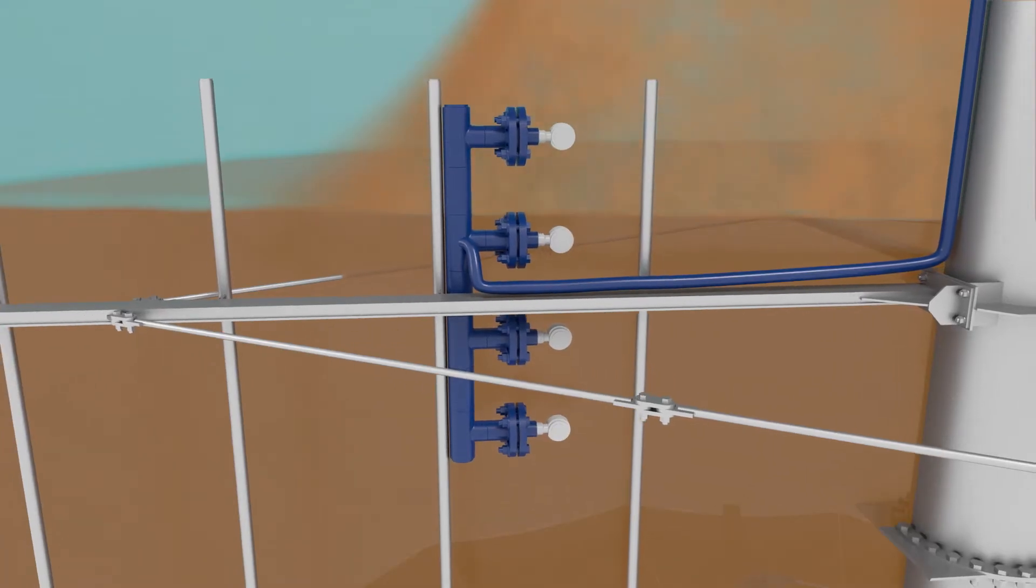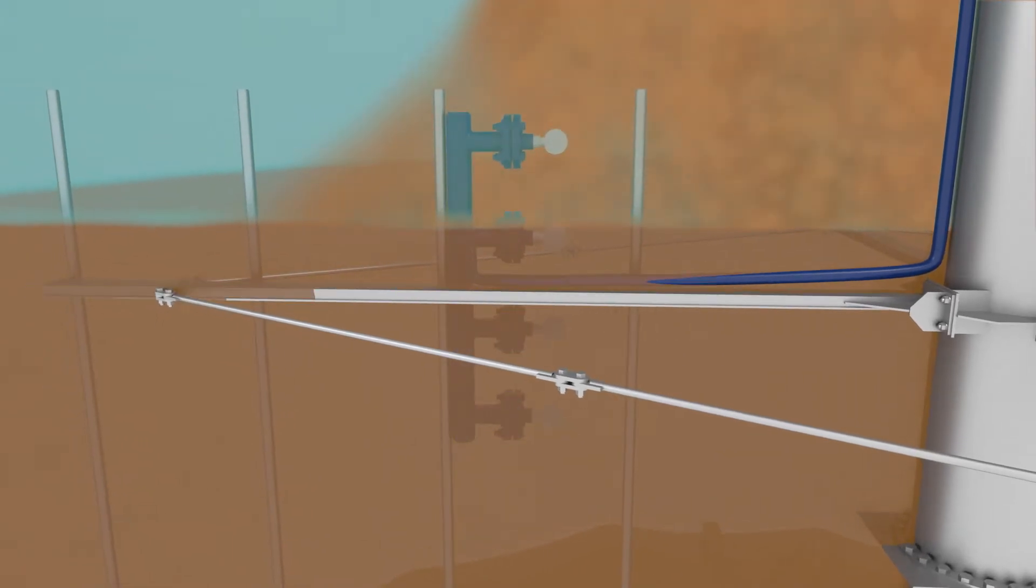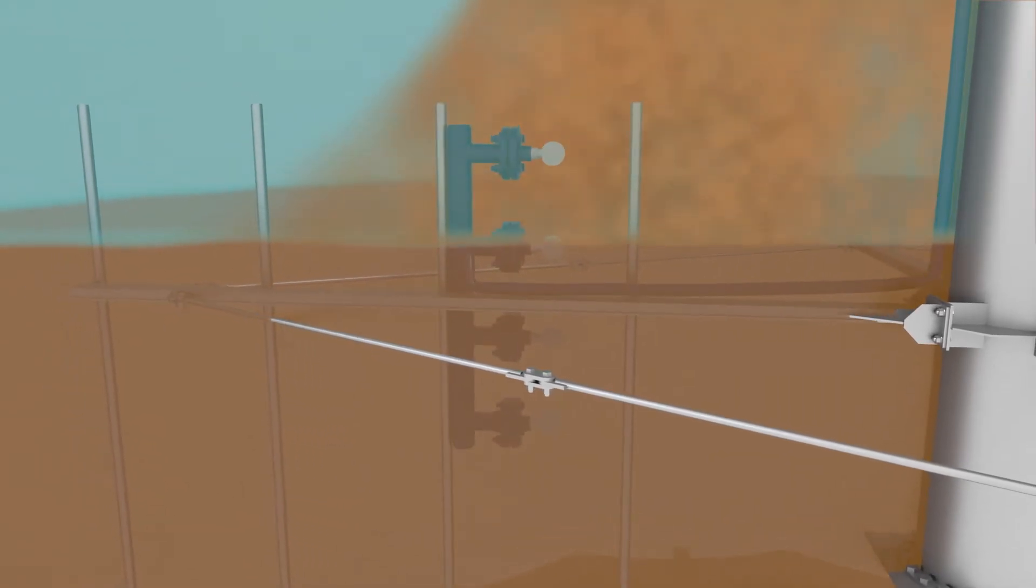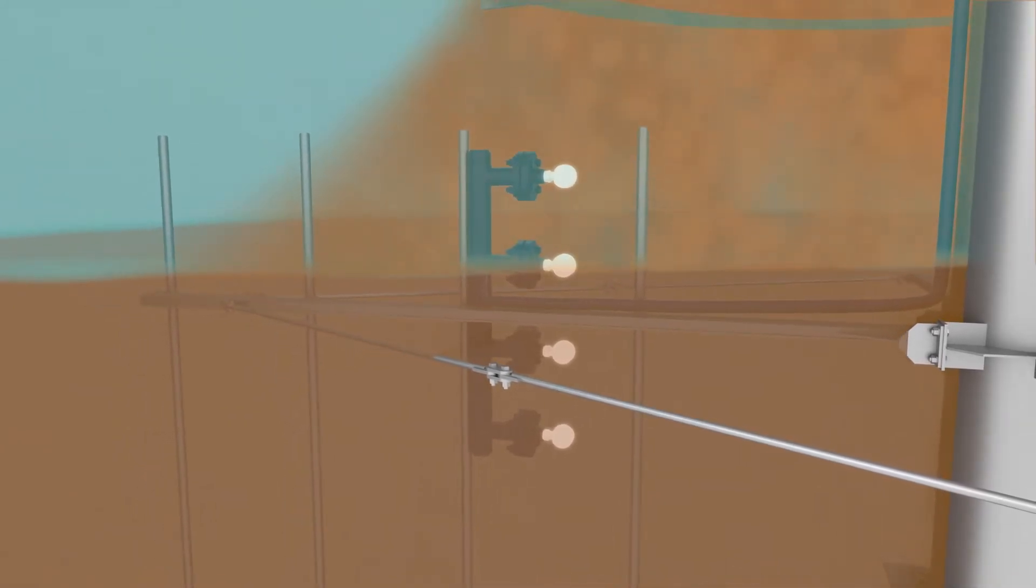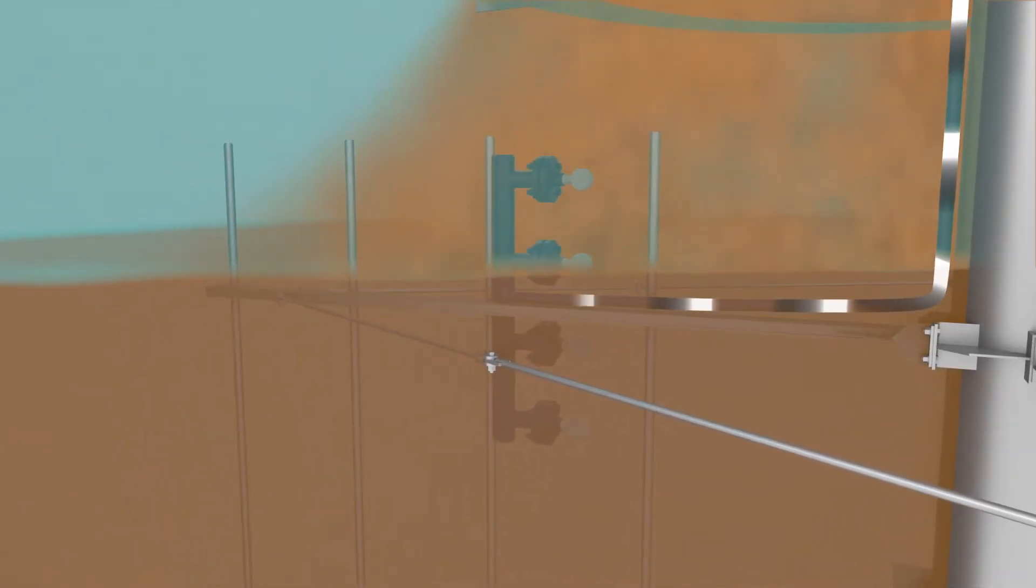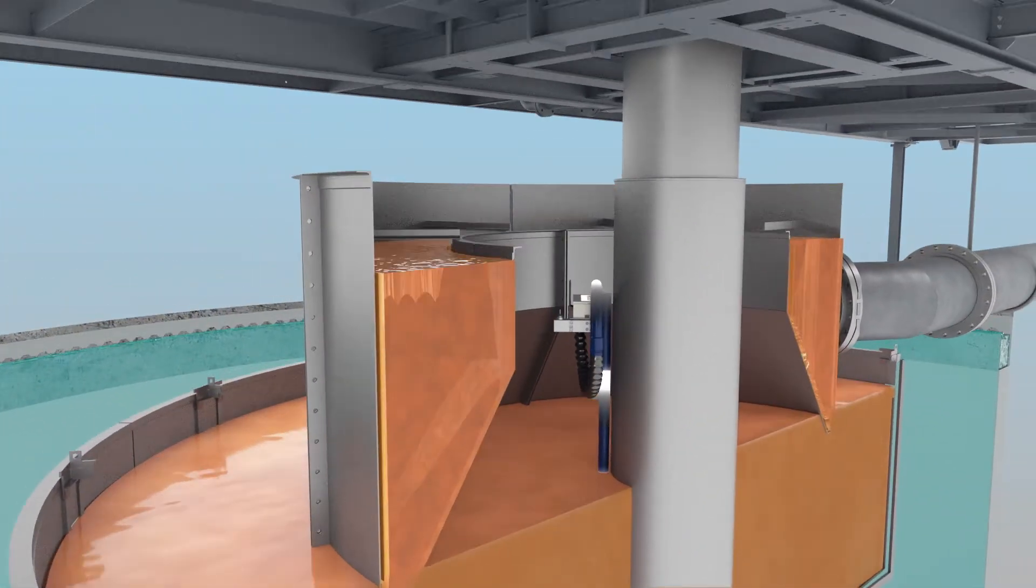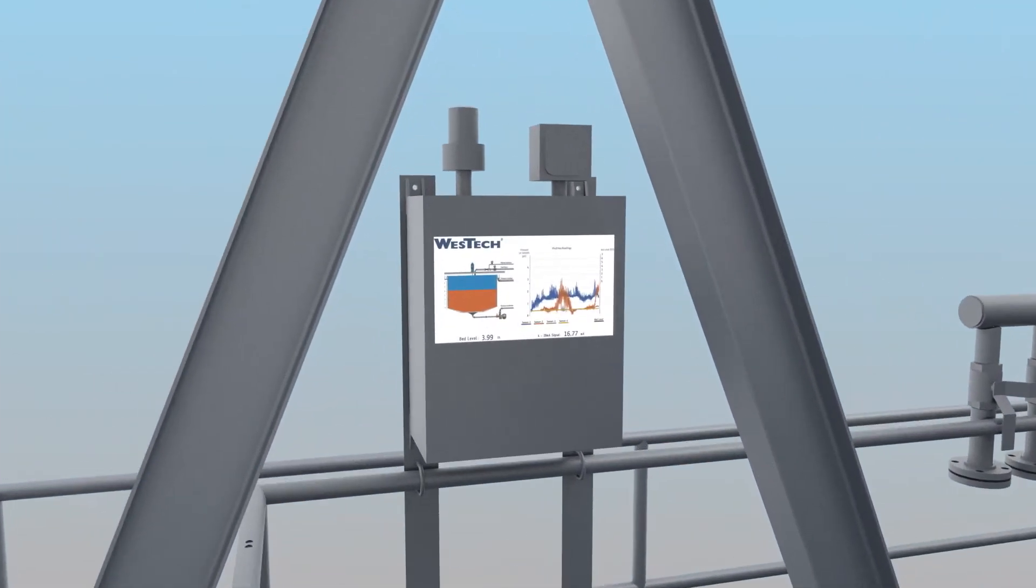The Mud Max attaches to the tank's rake mechanism. As the rake rotates through the thickener, multiple sensors located in the active bed level area pass through the compacting solids of the bed. Data from each sensor is wirelessly transmitted to a receiver located on the bridge, producing an accurate bed level measurement around the entire thickener.